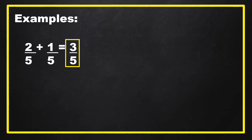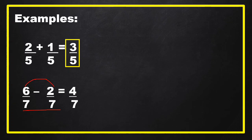Another example: 6 sevenths minus 2 sevenths. Again, same denominators, so we subtract the numerators. 6 minus 2 equals 4 over 7. Then we check if there is any common factor between 4 and 7. There's none, so 4 sevenths is already in lowest terms.